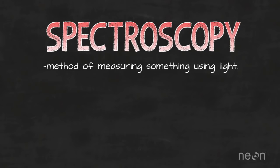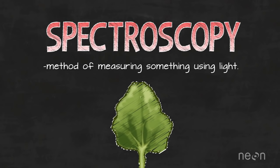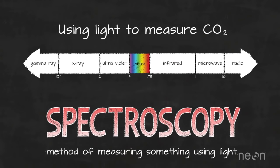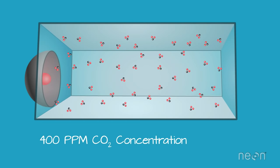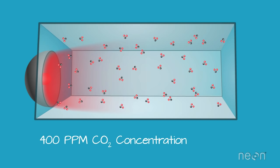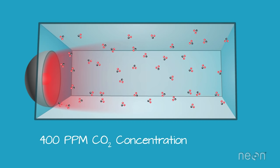Spectroscopy methods measure how much matter, like CO2, absorbs, reflects, or transmits light. Now, CO2 loves to absorb infrared light. So if we fill a chamber with a lot of CO2 and we shine infrared light into the chamber, a lot of that light will get absorbed.